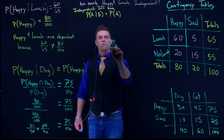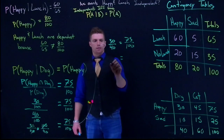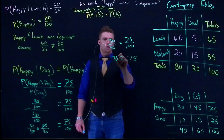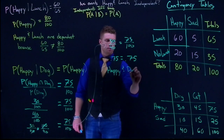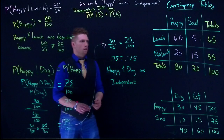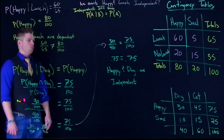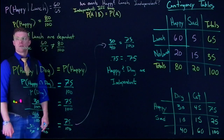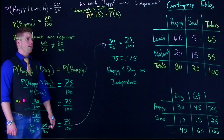We can cancel out those 100s, leaving us with 30 out of 40, which we need to check against 75 over 100. Simplifying, 0.75 equals 0.75. So in this case, happy and dog are independent. We confirmed this by showing that P(happy|dog) equals P(happy).